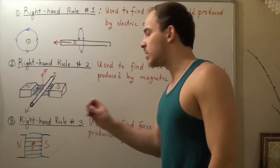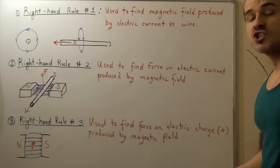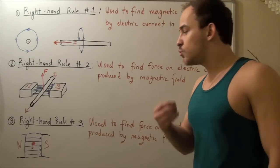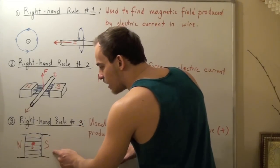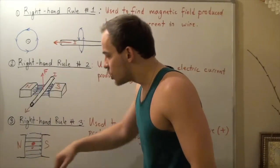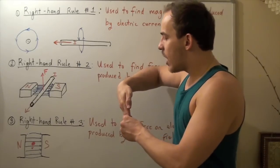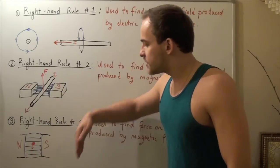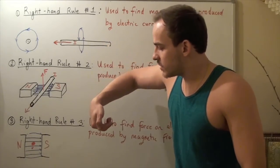Let's look at right-hand rule number three. This is used to find the force on a positive electric charge produced by a magnetic field. Suppose once again we have a north and south pole magnet, so our field lines are pointing from north to south. I allow a positive charge to flow downward while my field lines are going this way. I use the same exact rule as before, except now this represents the velocity vector of my charge — my charge is moving downward and my field lines are pointing this way.